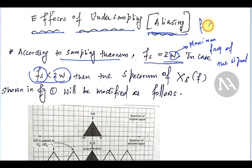According to the sampling theorem, the sampling frequency should be greater than or equal to 2W for recovering the signal. If you have more than 2W, you can get a well-defined signal, but the minimum it should be equal to 2W. If this condition is not satisfied, then it is under-sampling.